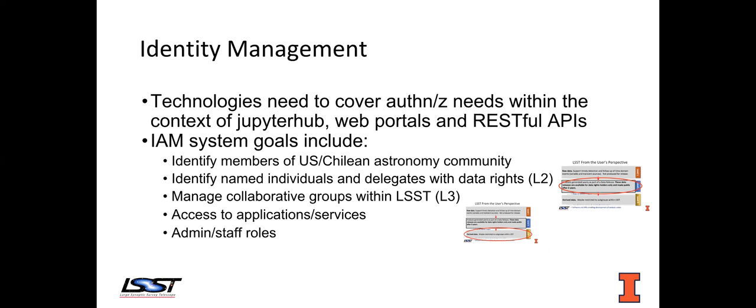I'm going to talk a little bit about identity management. This is a massive project within LSST, and there are many needs that we have to cover with identity management. One of the big needs is data access — the science platform by which users will access and compute over LSST data. There are really three ways users do that: through a Jupyter Hub notebook, through a web portal, or through RESTful APIs that allow them access to data. The core goals of the identity management system is to identify these US and Chilean astronomers, make sure we can identify named individuals and delegates that have data rights.